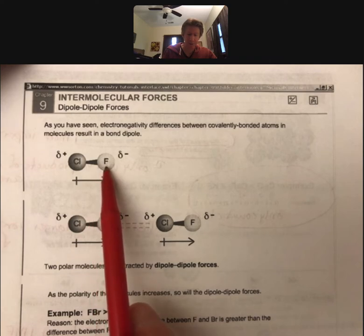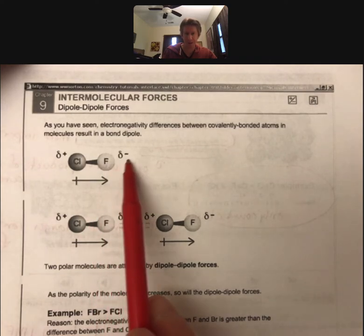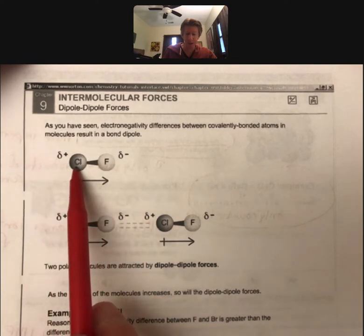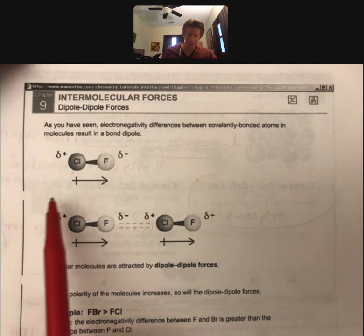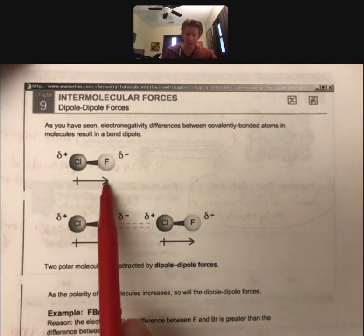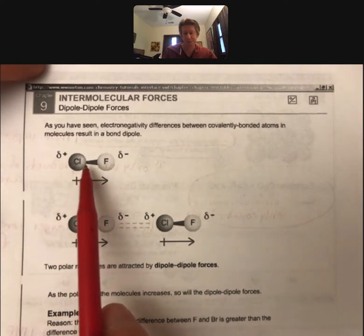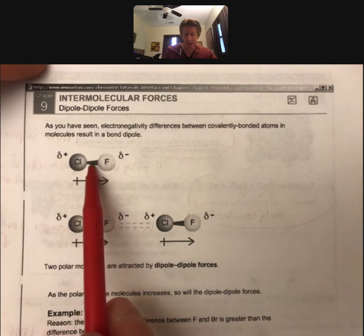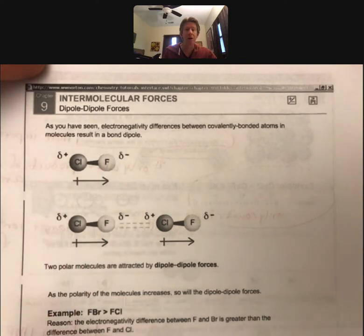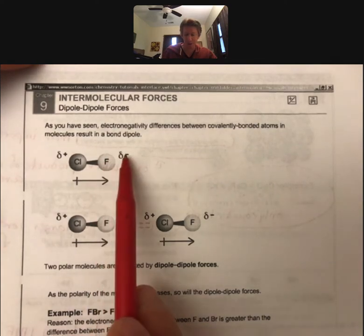The one that is more electronegative will be partially negative - that's what this means, delta minus. The one that is less electronegative will be delta plus or partial positive. This is what's called a plus arrow. The plus arrow shows the plus by the partial positive, and the arrow indicates that the electrons in this bond are spending more time associated with the fluorine. That's why the fluorine is partially negative.